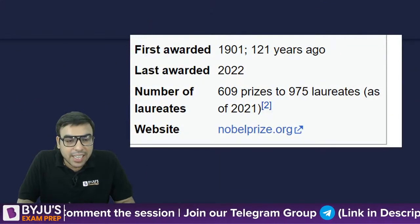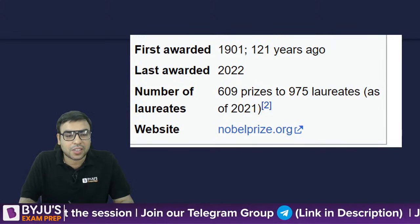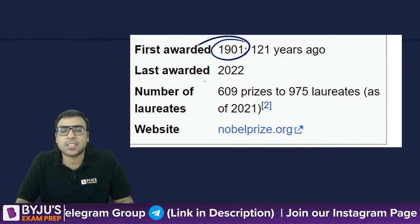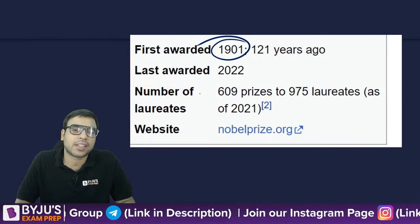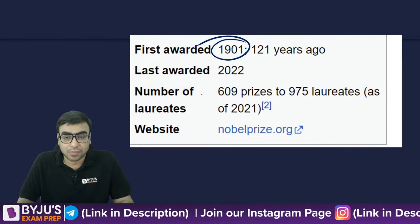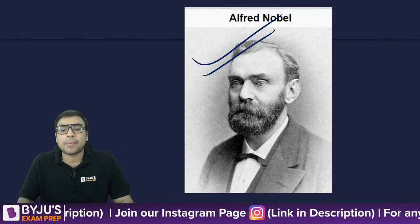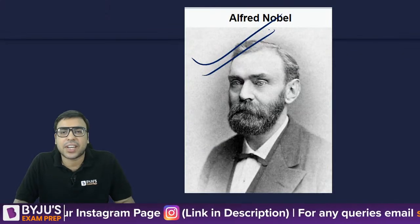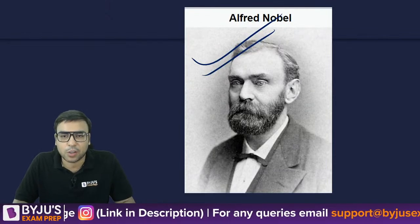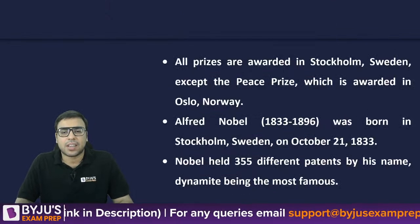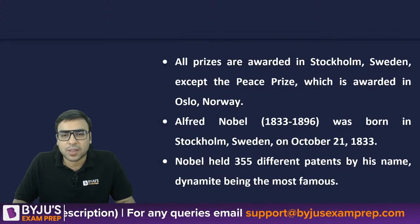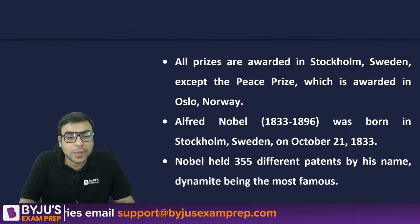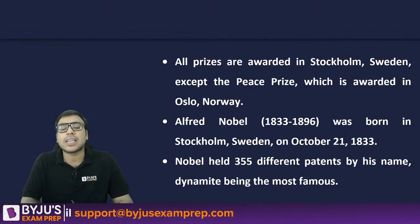The first Nobel Prize was given in 1901. Now, the question is who gives this award — all awards are given by Sweden except the Peace Prize.